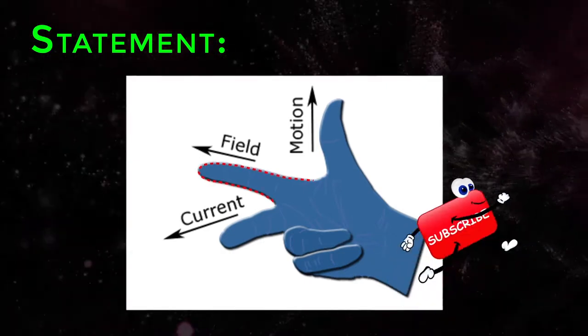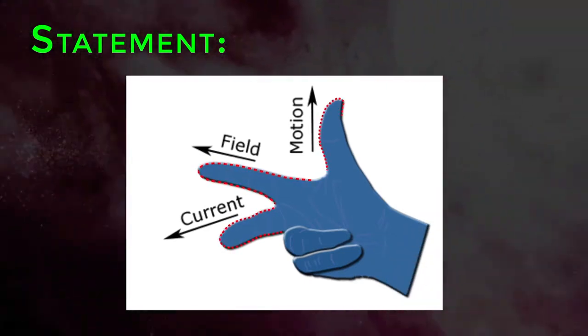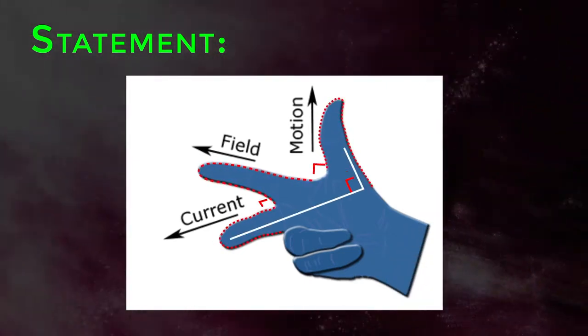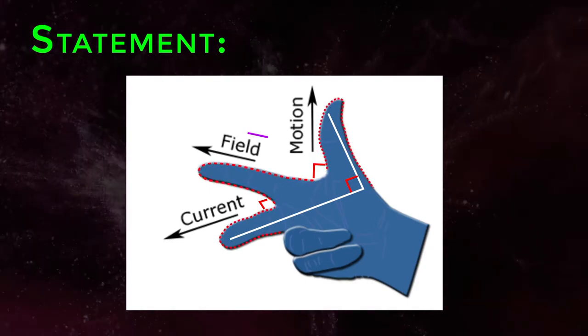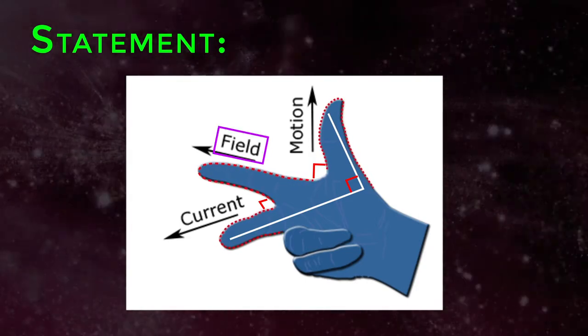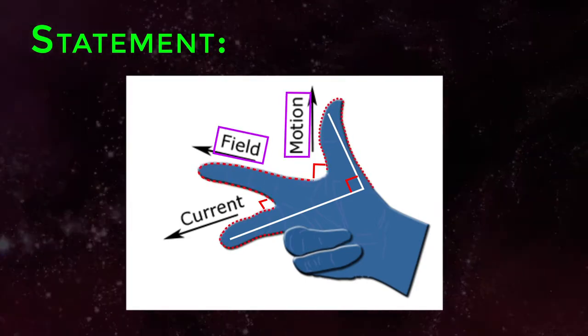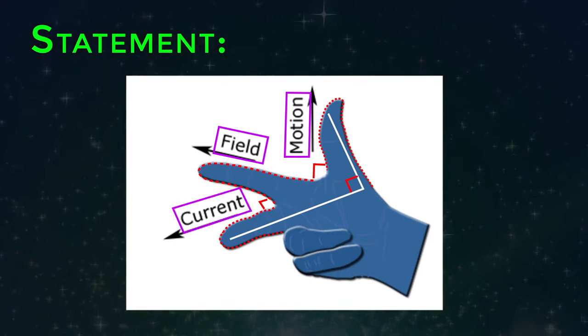Statement: Stretch the forefinger, middle finger, and thumb of right hand at right angles to one another. If the forefinger points in the direction of magnetic field, the thumb in the direction of motion of the conductor, then the middle finger points in the direction of induced current.